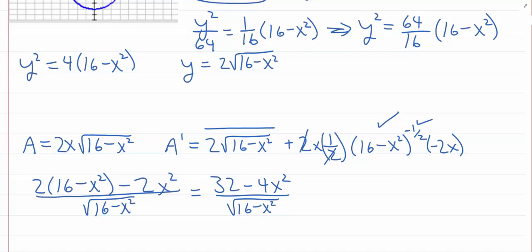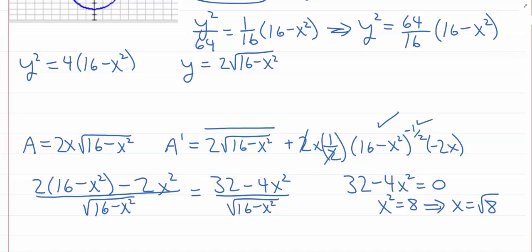This is going to be 32 minus 4X squared over the denominator. I want to set that equal to zero, but really I just need to set the numerator equal to zero. So I get 32 minus 4X squared equals zero, and solving for X gives X squared equals 8. Taking the positive square root since I'm only concerned with the first quadrant, I get X equals the positive square root of 8. So our optimal value occurs when X equals the square root of 8.